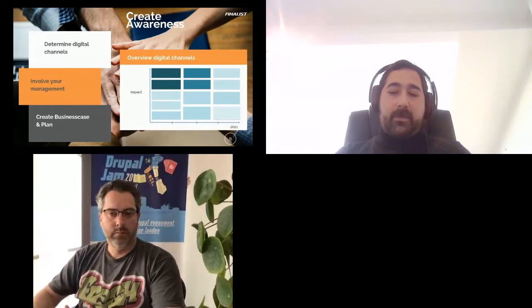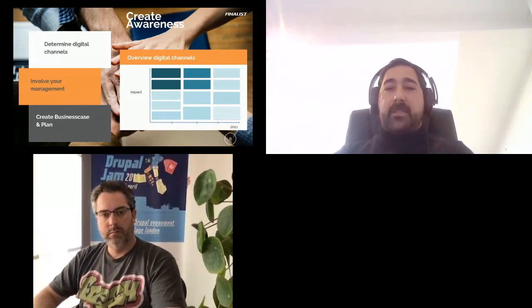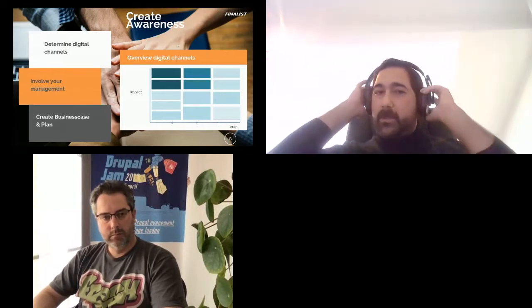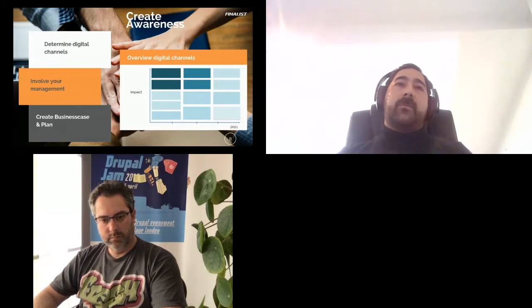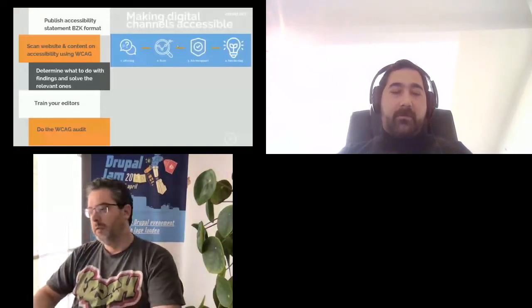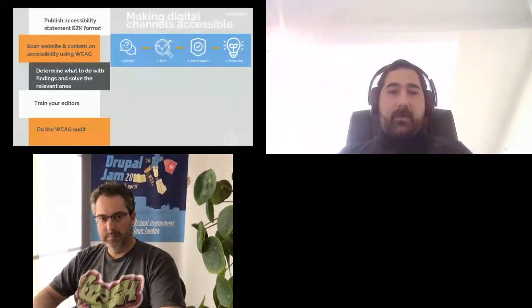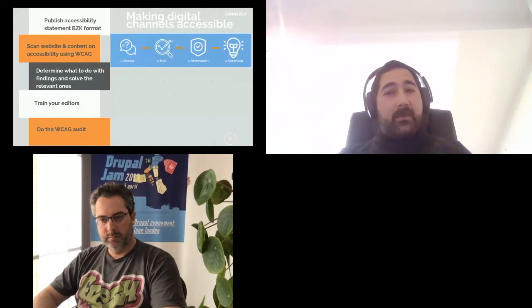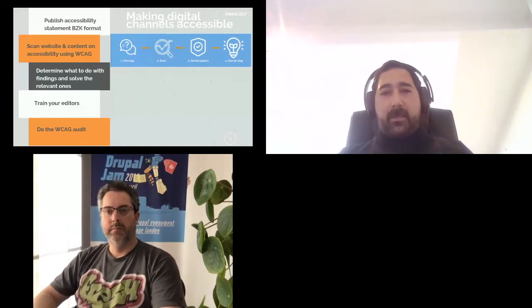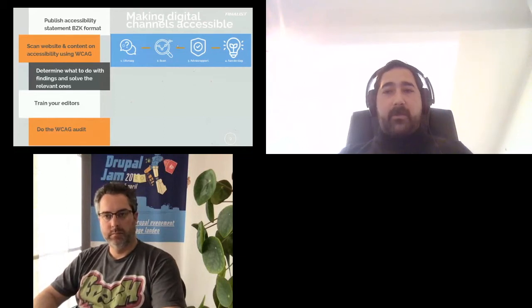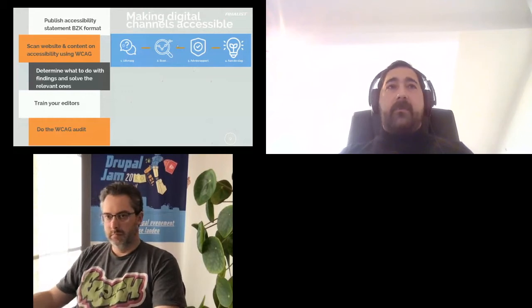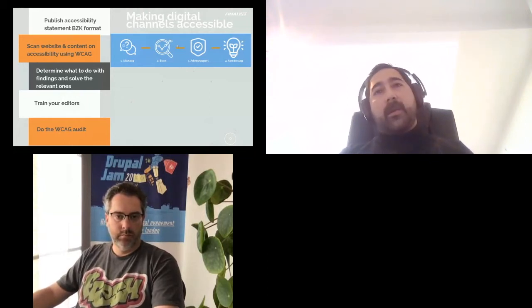When you want to start making your channels accessible, you need to start by publishing an accessibility statement based on the model of Binnenlandse Zaken — I will share the link to the format you could use in one of my last slides, along with examples of a correct and incorrect statement. You can also start scanning your website and content against the WCAG accessibility criteria. I've made my own plan for this, set up in four stages: first, get in dialogue with your customer and get information about their purpose and goals regarding accessibility — is it only about changing the user interface, or do they really want to help people with disabilities?